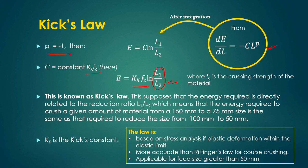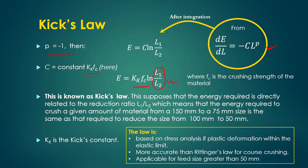Once you know Kick's constant, the material strength, and the product and feed sizes, you can calculate the energy requirement for a given reduction ratio. This law is based on stress analysis with plastic deformation within the elastic limit, and is more accurate than Rittinger's law for coarse crushing, which is applicable for feed sizes greater than 50 millimeters.